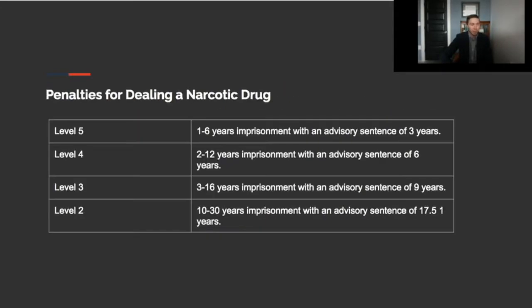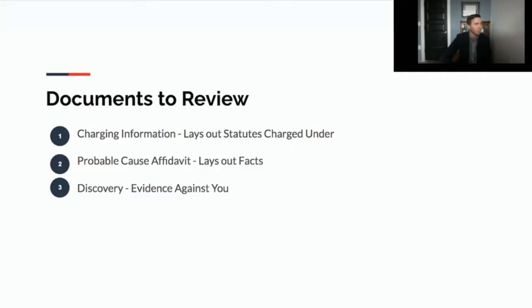The penalties for possession of a narcotic drug are also varied. At the low end, with level 5, it's 1-6 years imprisonment with an advisory of 3 years. And at the high end, it's 10-30 years with an advisory of 17.5 years. So at the high end, you can see, as a level 2 felony, the penalty is extremely serious.